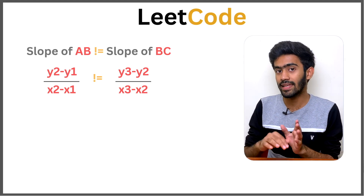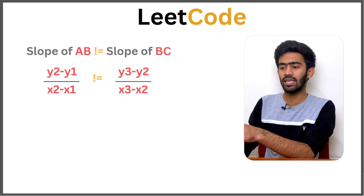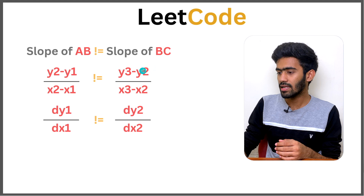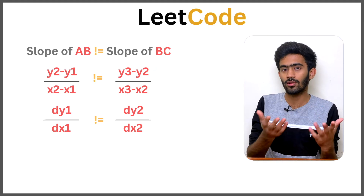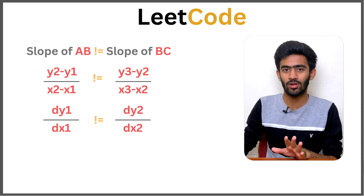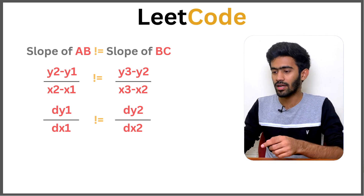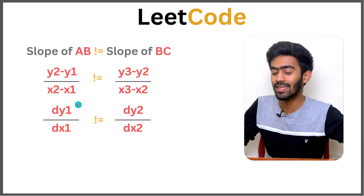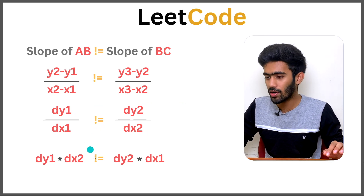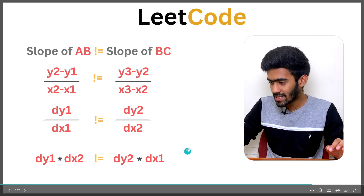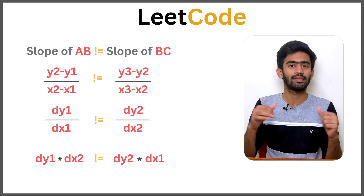To avoid division, we use cross-multiplication. We define dy1, dx1 for the first pair and dy2, dx2 for the second pair — differences in y and x respectively. The condition becomes: dy1 * dx2 ≠ dy2 * dx1. If this is true, it is a boomerang. If false, it is not a boomerang.